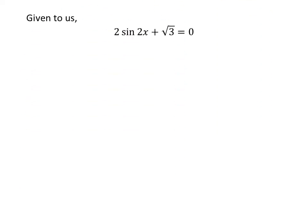We are given 2 times sine of 2x plus square root of 3 is equal to 0. Adding minus square root of 3 to both sides gives us 2 times sine of 2x is equal to minus square root of 3. Dividing the whole expression by 2 gives us sine of 2x is equal to minus square root of 3 upon 2.